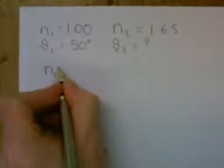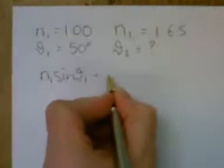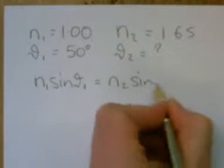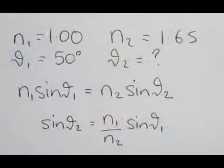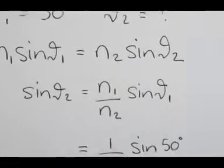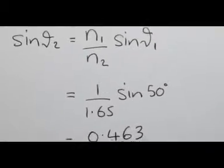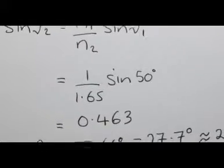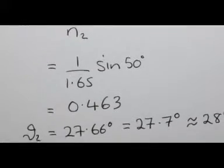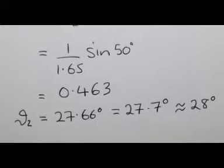Write down the equation we will use: Snell's law. N1 sin theta1 equals N2 sin theta2. Rearrange the equation to get sin theta2 equals N1 divided by N2 times sin theta1. Substituting the values, remember to have your calculator in degrees, not radians. The answer is 27.7 degrees or 28 degrees to the nearest whole number.